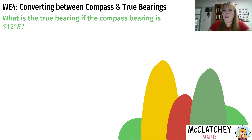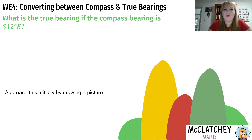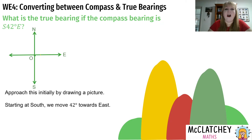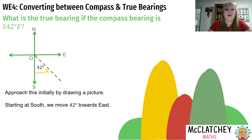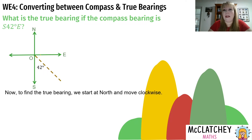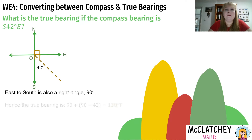Now we'll convert a compass bearing to a true bearing. Given S42°E, the best approach is to draw a picture. Starting at the origin looking north, a compass bearing of S42°E means I start at south and move 42 degrees toward east — that's the small angle I label as 42 degrees. For the true bearing, I start at north and move clockwise: north to east is 90 degrees, then the difference from south to east is 90 degrees, and adding the remaining 48 degrees gives 138 degrees true.